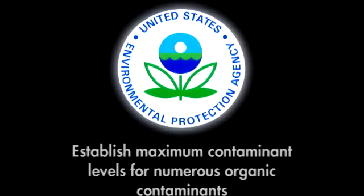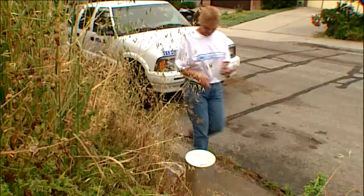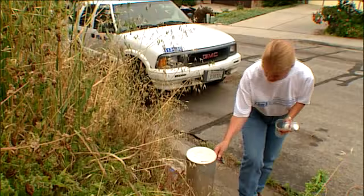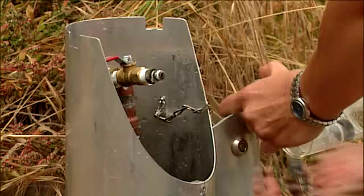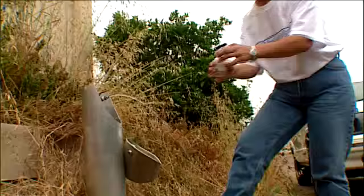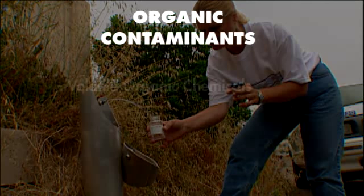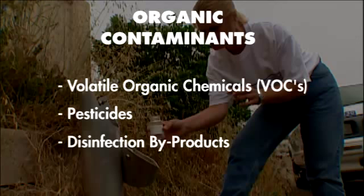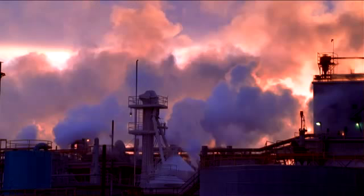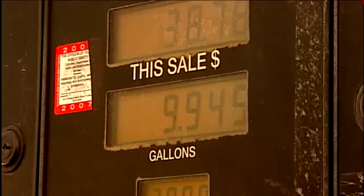The Safe Drinking Water Act requires the U.S. Environmental Protection Agency to establish maximum contaminant levels for numerous organic contaminants. Communities must sample for some specific organic contaminants, plus several unregulated contaminants. Organic contaminants generally fall into one of the following categories: volatile organic chemicals (VOCs), pesticides, or disinfection byproducts (DBPs).